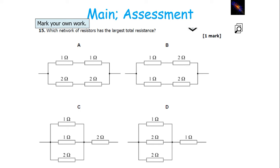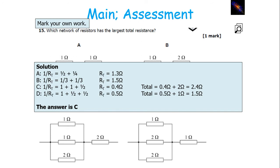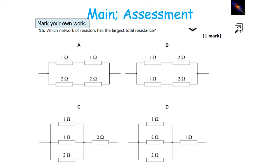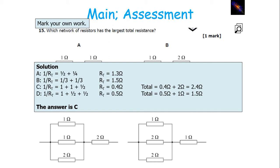You need to work out the resistances for each of these networks. In network 1, you have two parallel arms of 2 ohms and 4 ohms. Using 1 over R total equals 1 over R1 plus 1 over R2, you get an equivalent resistance of 1.3 ohms. For B, using different sized resistors, you get 1.5 ohms. For C, you calculate 1 over 1 plus 1 over 1 plus 1 over 2, flip it to get 0.4 ohms, then add the 2 ohm series resistor to get 2.4 ohms. For D you get 1.5 ohms, so the total value is C, since the 2 ohm series resistance dominates.